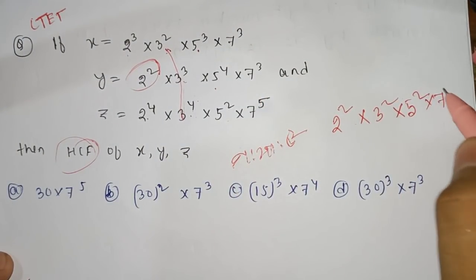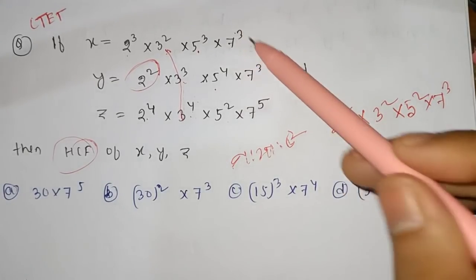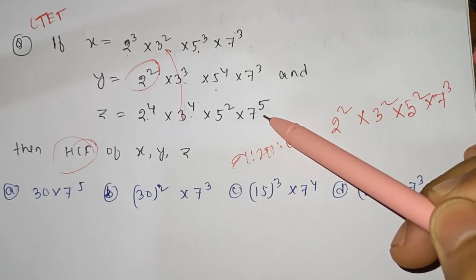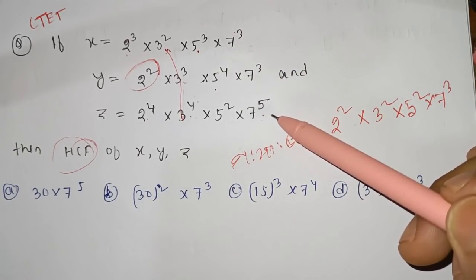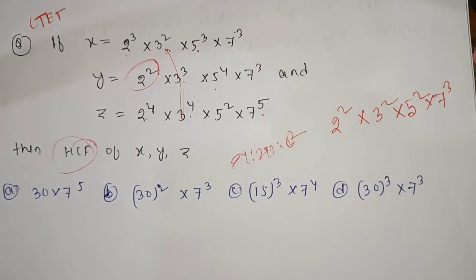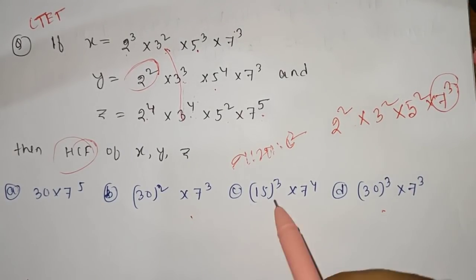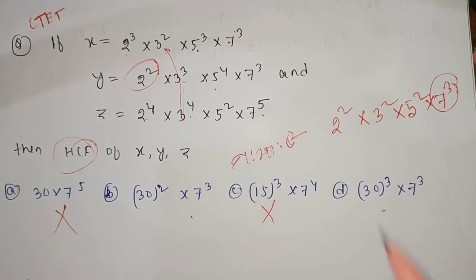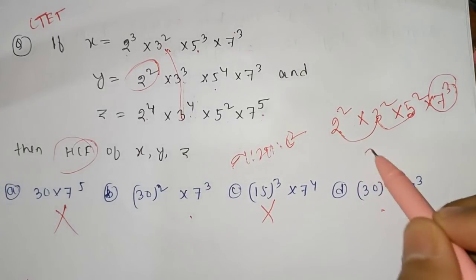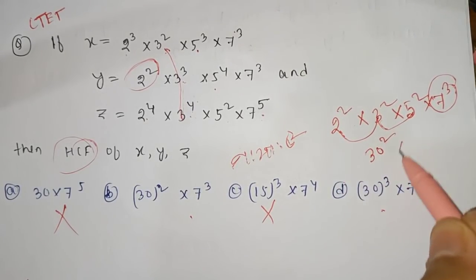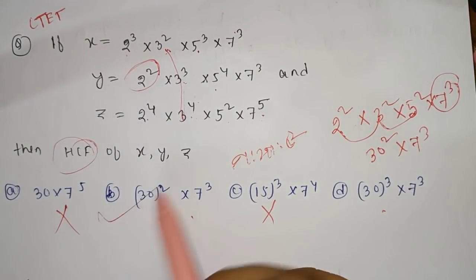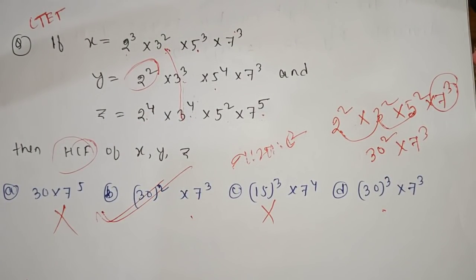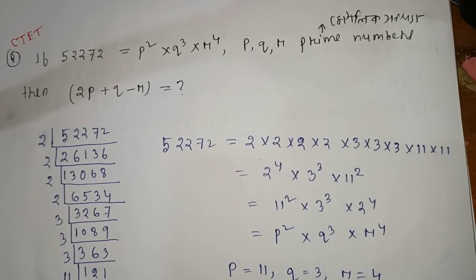7 cube is equal to 7 cube — this is clear. We can solve this. We can cancel 7 cube directly. We can also cancel 3 cube. This is option B, which is correct.